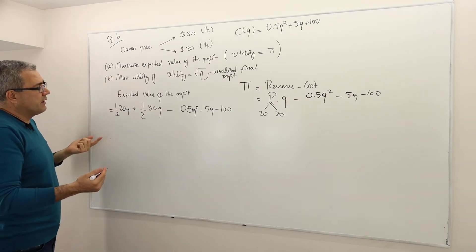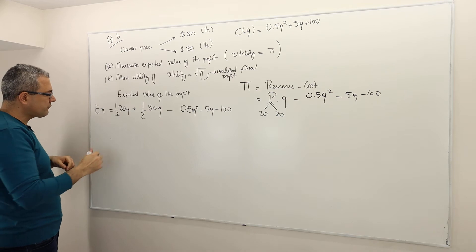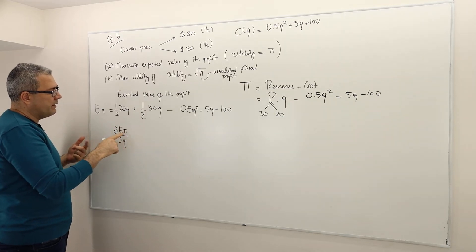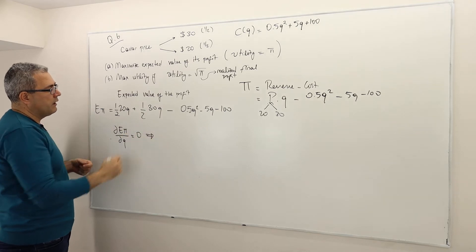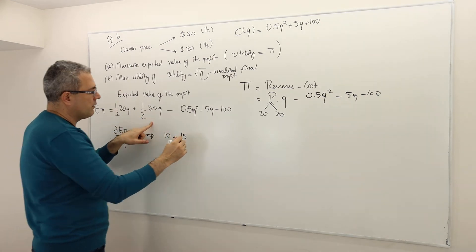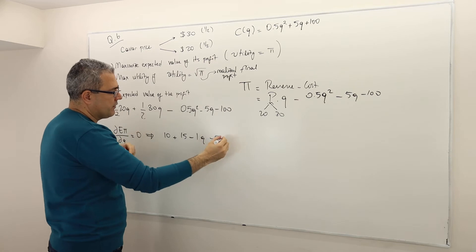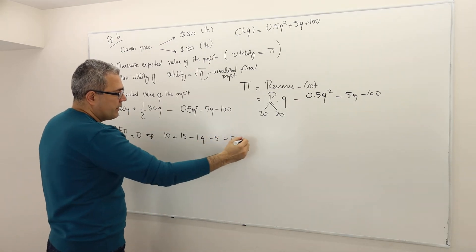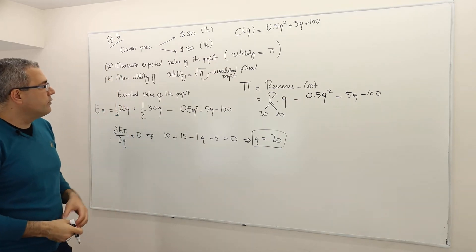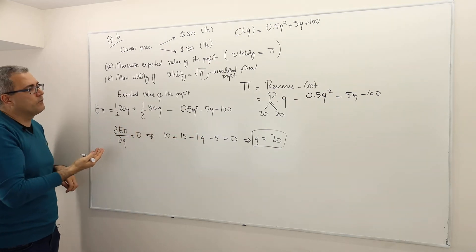What quantity maximizes expected profit? You solve the first-order conditions — take the derivative with respect to quantity and set it equal to zero. You get 10 plus 15 from the revenue terms, Q drops out from the derivative of 0.5Q squared giving minus Q, and minus 5 from the linear term, and the derivative of 100 is zero. So Q equals 25 minus 5 equals 20.